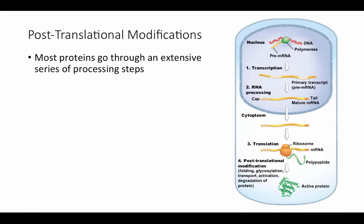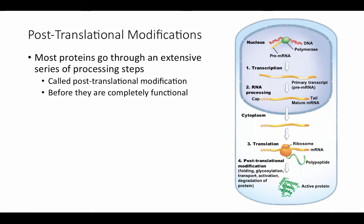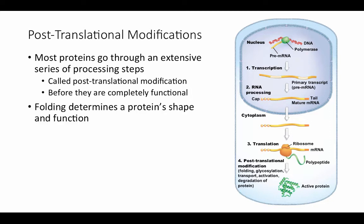The protein is not quite finished yet at this point. We now have the primary structure — the sequence of amino acids — but that's not what makes a functional protein. A functional protein has to be folded correctly. Different molecules might need to be added to make it functional, so it goes through an extensive series of processing steps called post-translational modification. Proteins are not really considered functional until they have achieved their functional conformation — folding determines a protein's shape and function.